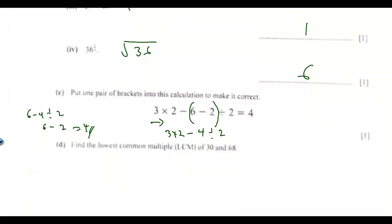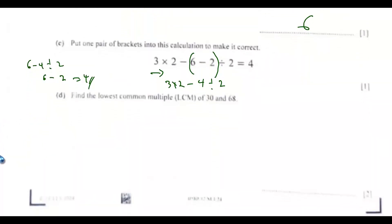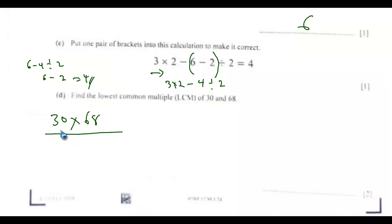For part d, find the Lowest Common Multiple (LCM) of 30 and 68. One method is to multiply 30 by 68 and then divide by the Highest Common Factor of 30 and 68, which is 2. If you input this into your calculator, you should get 1020.